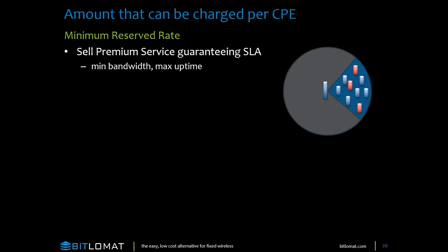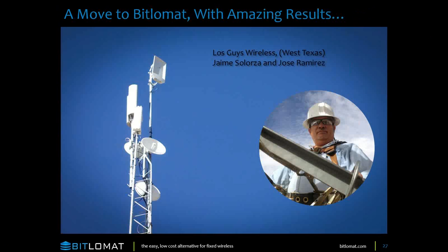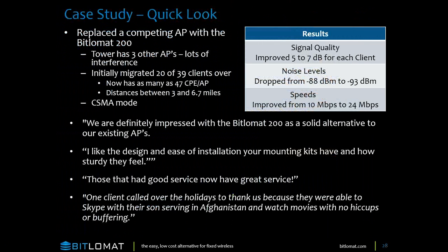Selling the premium services with guaranteed service level agreements — this was really cool. Jaime Salarza and his partner got some Bitlamat gear. The only thing they did was take down a sector that begins with the letter U and replaced it with a Bitlamat 200. There was lots of interference and other APs around. They initially migrated 20 clients over — they now have 47 on that sector. All they did was swap out the access point and they doubled their throughput and decreased their latency. They're running in CSMA mode, so they're not even getting the benefit of our TDMA protocol.